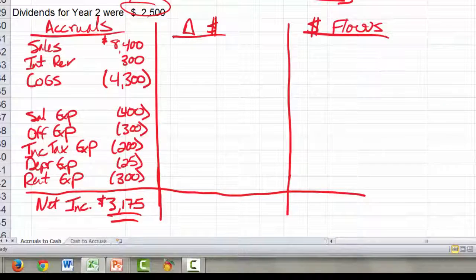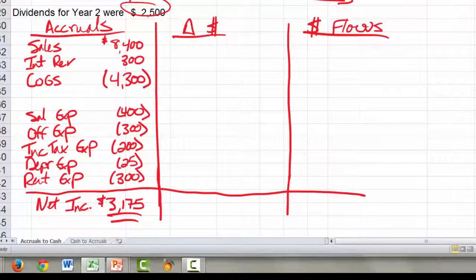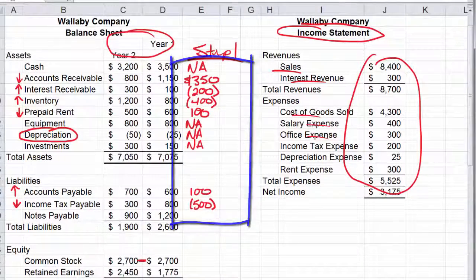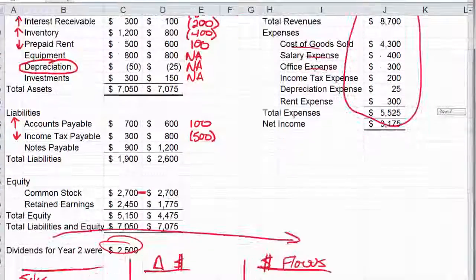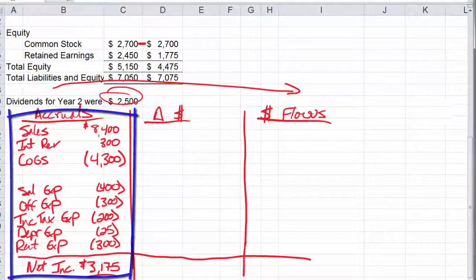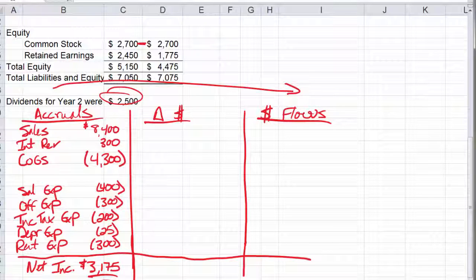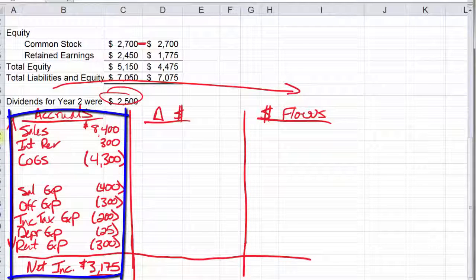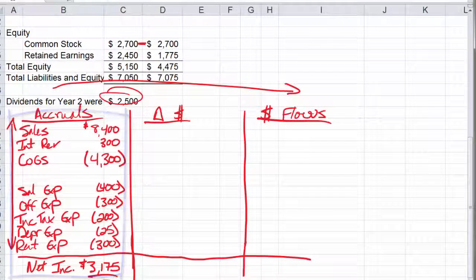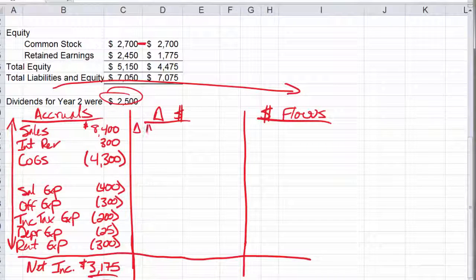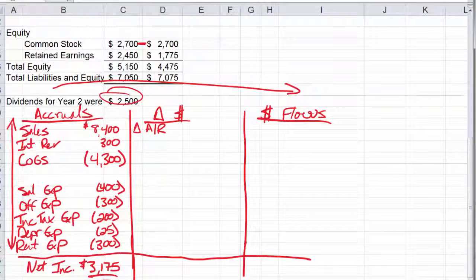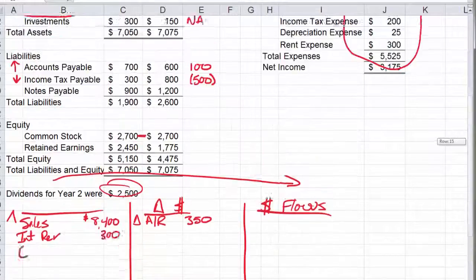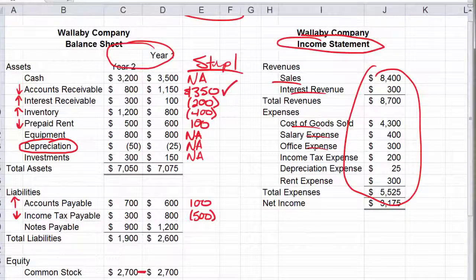Step four, we're going to match up the changes that we have in step one with the accrual lines that we have down here. So let's start with accounts receivable. If you had to match up accounts receivable with one of these line items, what would you match it with? Probably with sales. So we've got a change in accounts receivable and it was a positive $350. I'm going to go up and check off that I've used that one.